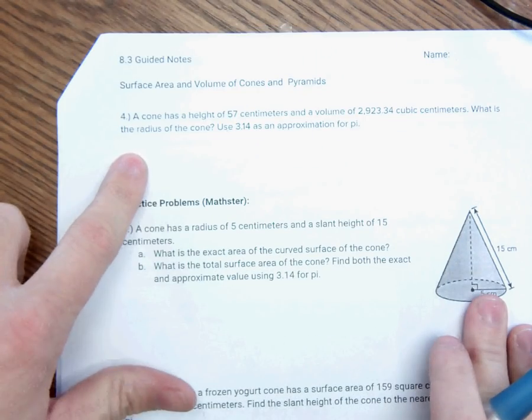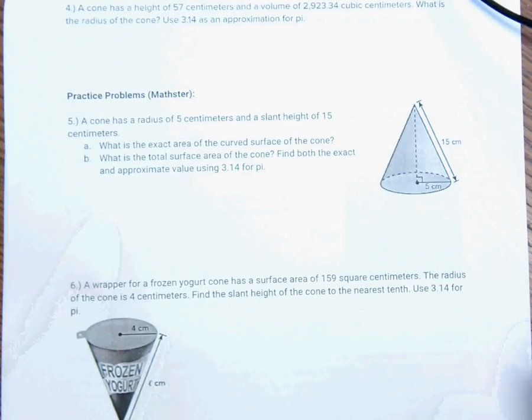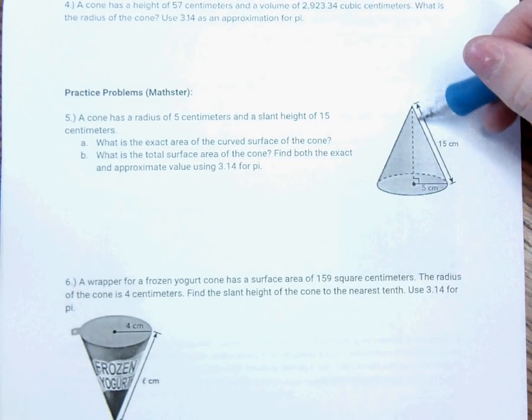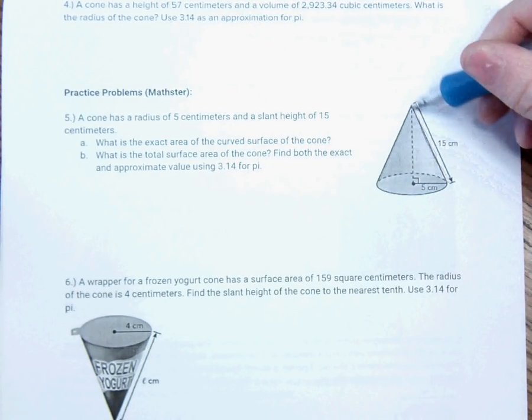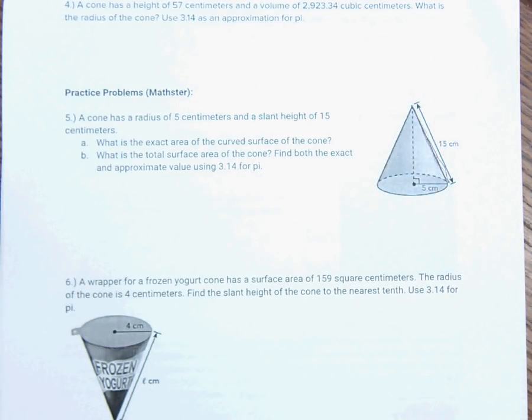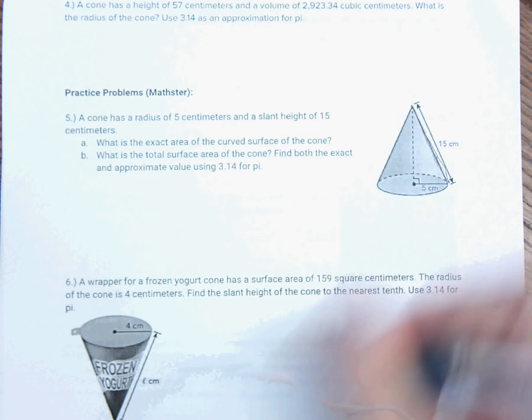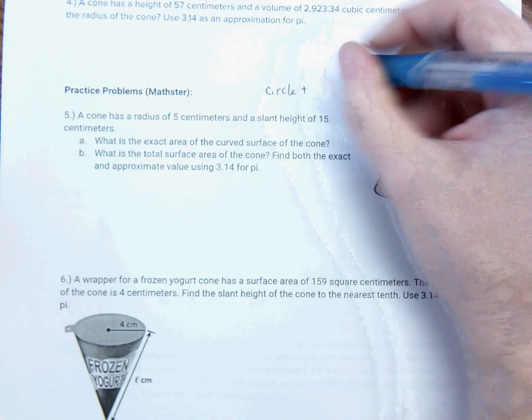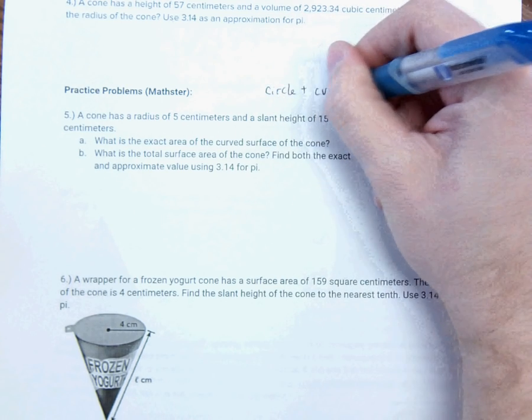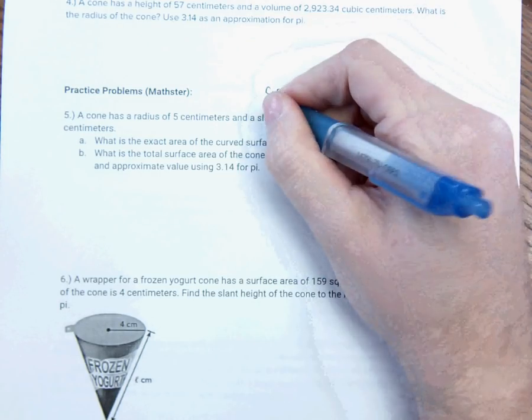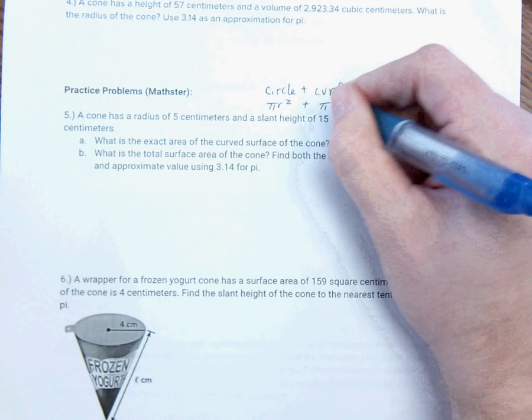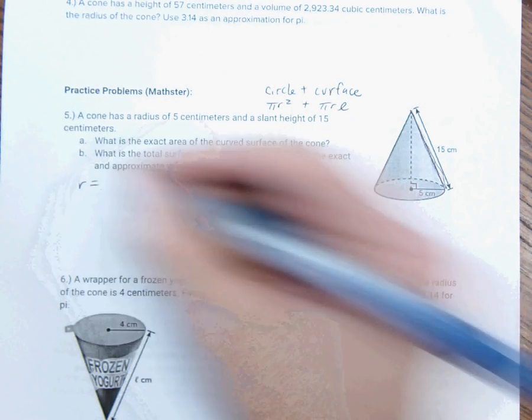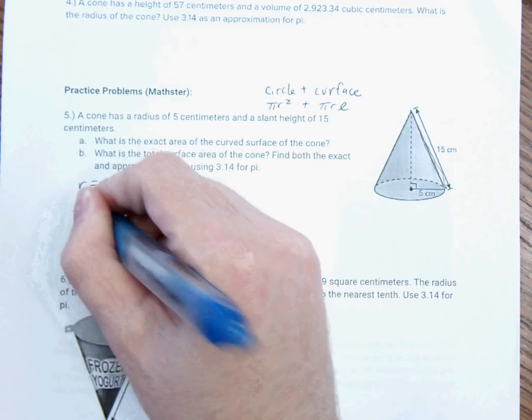Padawans do that one. This one's you, too. This one's me. So, a cone has a radius of 5 centimeters and a slant height of 15. And remember, I said I'd talk about that again. Remember, the slant height is basically the diagonal side. What is the exact area of the curved surface? So, remember, the surface area was the circle plus the curved surface, the lateral surface area. So, and that was pi R squared plus pi R L.